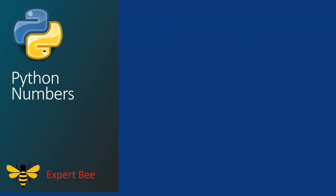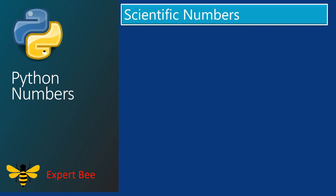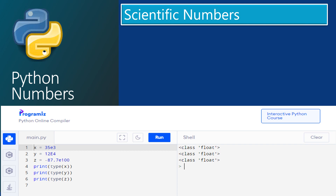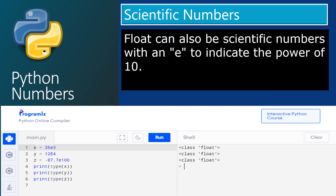Now let us look at scientific numbers. Float can also be scientific numbers with an e to indicate the power of 10. For example, x is equal to 35e3, y is equal to 12e4, z is equal to minus 87.7e100. Print type x, print type y, print type z. After typing in the main section and running the code, the output clearly shows that all x, y, and z are of data type float. This shows that scientific numbers with an e to indicate the power of 10 are also float data types.